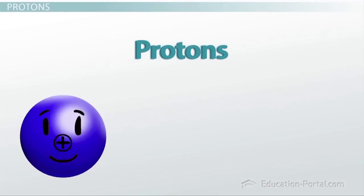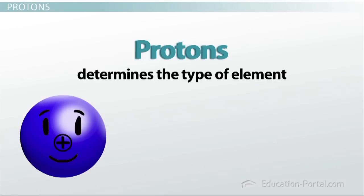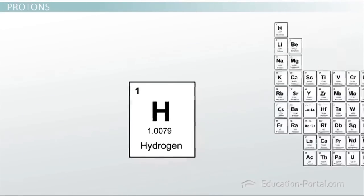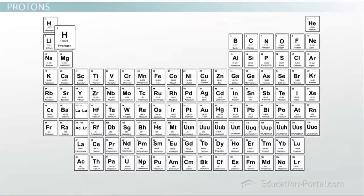Protons are probably one of the single most important parts of an atom. The number of protons an atom has determines what type of element it is. For example, all elements that have only one proton are going to be atoms of hydrogen. Find hydrogen at the top left side of your periodic table.